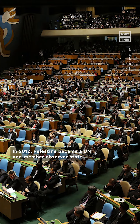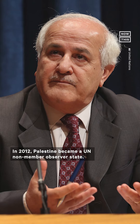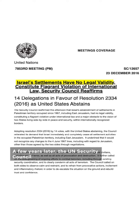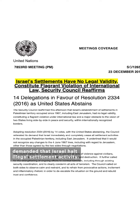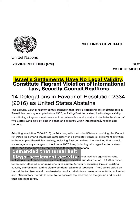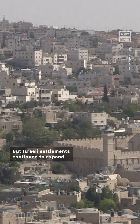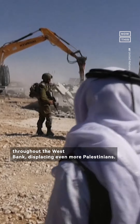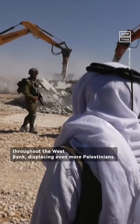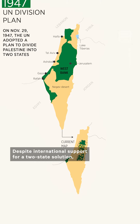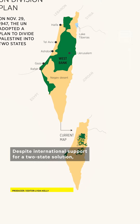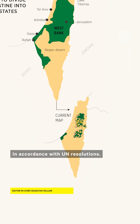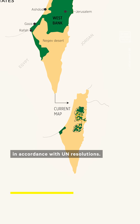In 2012, Palestine became a UN non-member observer state. A few years later, the UN Security Council demanded that Israel halt illegal settlement activity. But Israeli settlements continued to expand throughout the West Bank, displacing even more Palestinians. Despite international support for a two-state solution, it has not been possible to resolve the outstanding issues in accordance with UN resolutions.